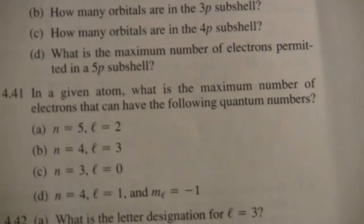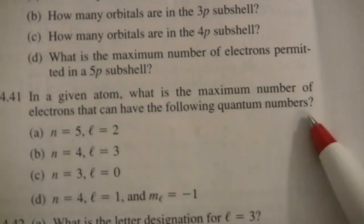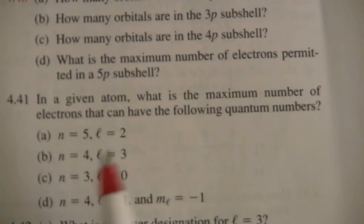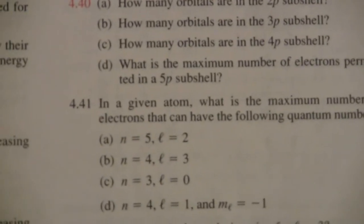Alright, and in a given atom, what is the maximum number of electrons that can have the following quantum numbers? Okay, so here we have, we're on the fifth level, and l equals 2. So how many electrons can have those two quantum numbers?